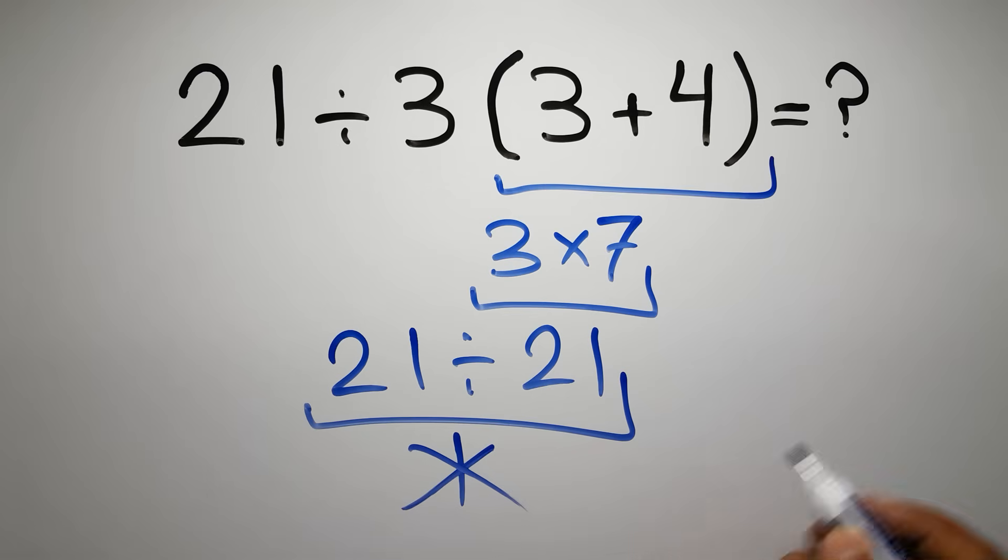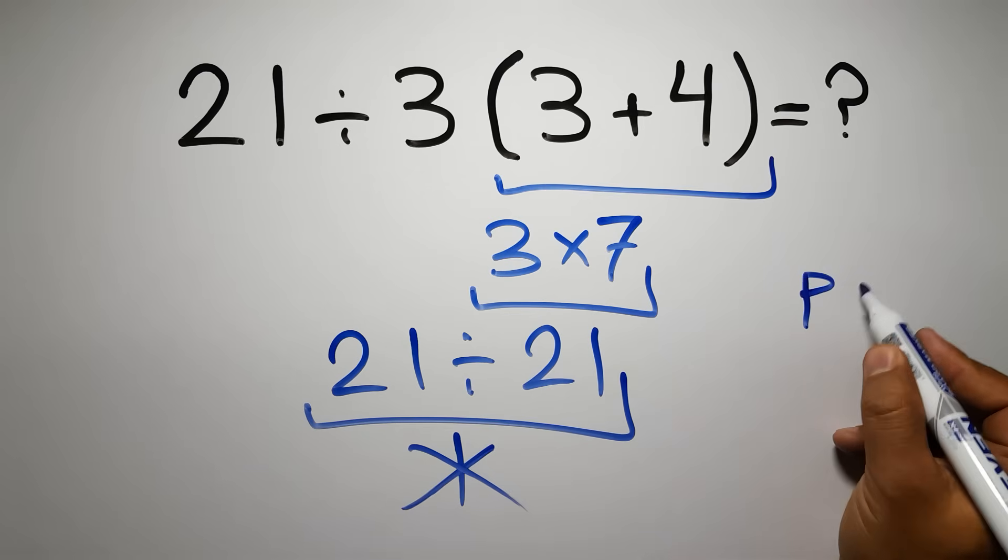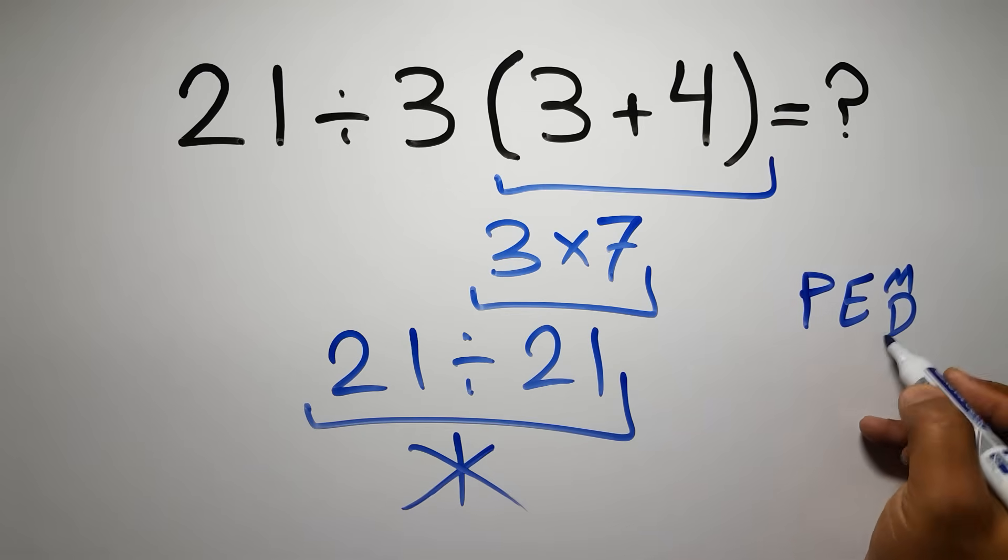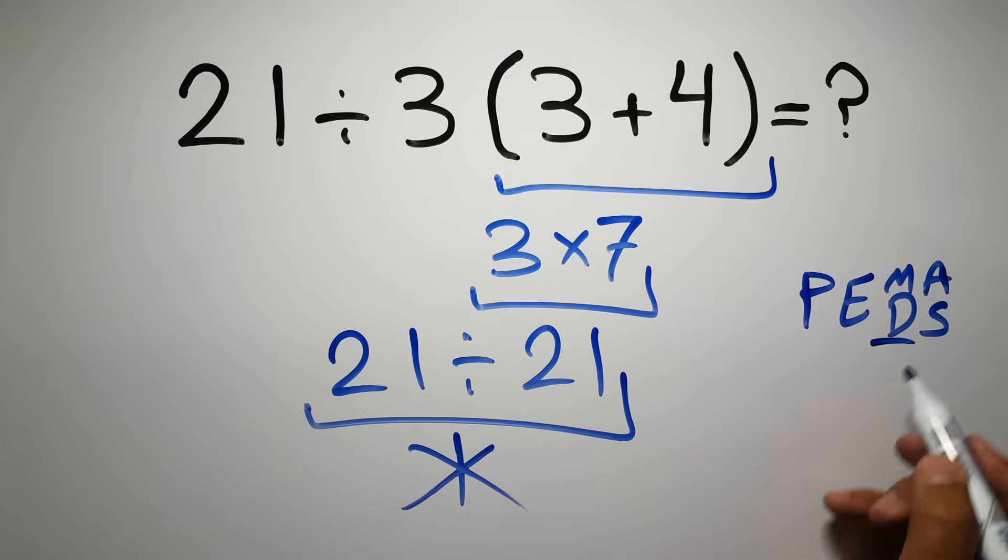Because according to the order of operations, first we have to do parentheses, then exponents, then multiplication or division, and finally addition or subtraction. Remember that multiplication and division have equal priority, and we have to work from left to right. The same applies to addition and subtraction.